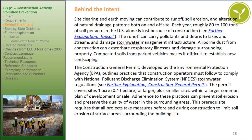The Construction General Permit developed by the EPA outlines practices that construction operators must follow to comply with the National Pollutant Discharge Elimination System (NPDES) Stormwater Regulations. The permit covers sites 1 acre (0.04 hectare) or larger, plus smaller sites within a large common plan of development or sale. Adherence to these practices can prevent soil erosion and preserve water quality. This prerequisite requires that all projects take measures before and during construction to limit soil erosion around the building site.